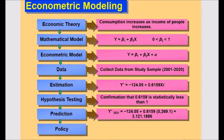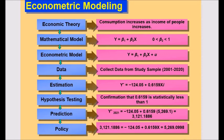And the final step is the policy decision. Now, you can make an income policy for 2021. To answer the question, what level of income will guarantee the target amount of consumption expenditure? What you need to do?